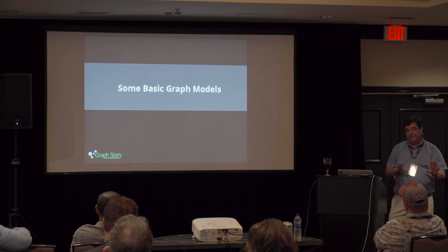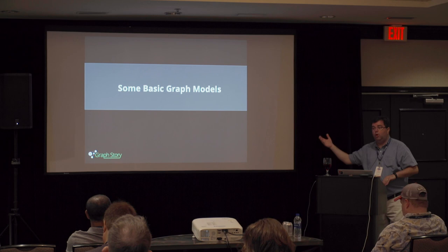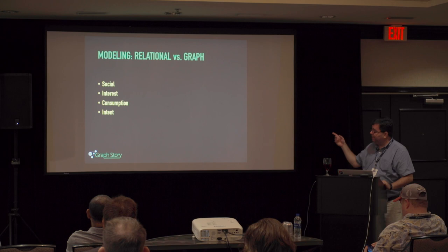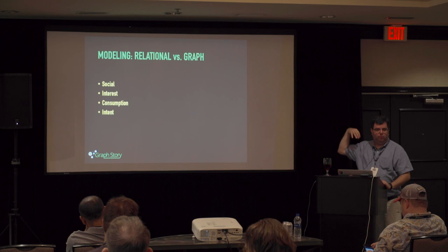Now we're going to transition into some basic graph models. This should give you a foundation. Everybody raised their hand on the relational side, so when you see relational examples you should know what I'm talking about, and the graph model will give you the one-for-one comparison. We'll cover social, interest, consumption, and then intent — that's prediction, modeling out to show what would likely happen based on the data we know about.